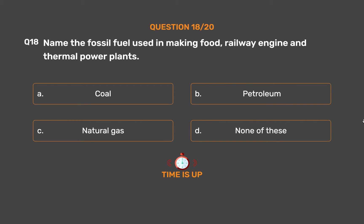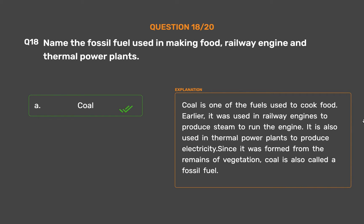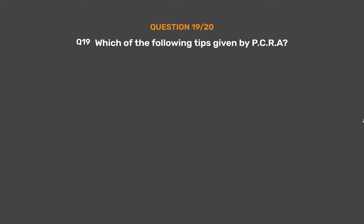The correct answer is Option A: Coal. Coal is one of the fuels used to cook food. Earlier, it was used in railway engines to produce steam to run the engine. It is also used in thermal power plants to produce electricity. Since it was formed from the remains of vegetation, coal is also called a fossil fuel.